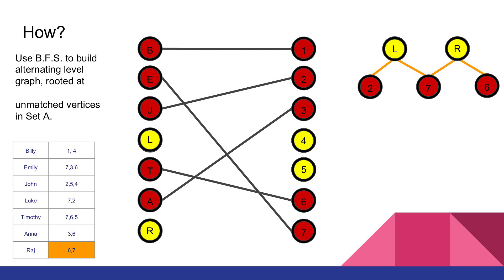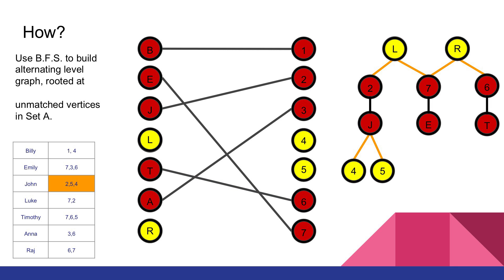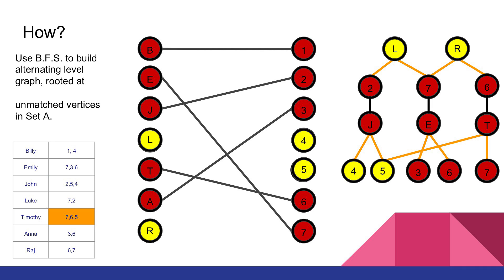Now we're on the right side of the graph. We've got to put into our graph edges that are in the matching. Looking in our bipartite graph, we can see highlighted in blue there is an edge from 2 to J, 7 to E, and 6 to T. Then we move back over to the left and look for edges that are not in the current matching that go from J, E, and T — note that J to 2 is not included because it is in the current matching. So I have J to 4 and J to 5, E to 3 and E to 6, and T to 7 and T to 5. We stop here because we've reached a level which has unmatched vertices in it, which are 4 and 5.